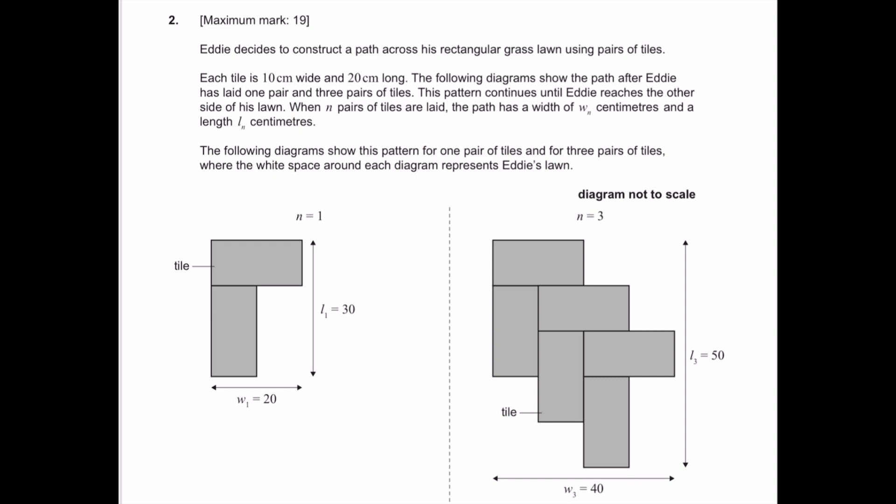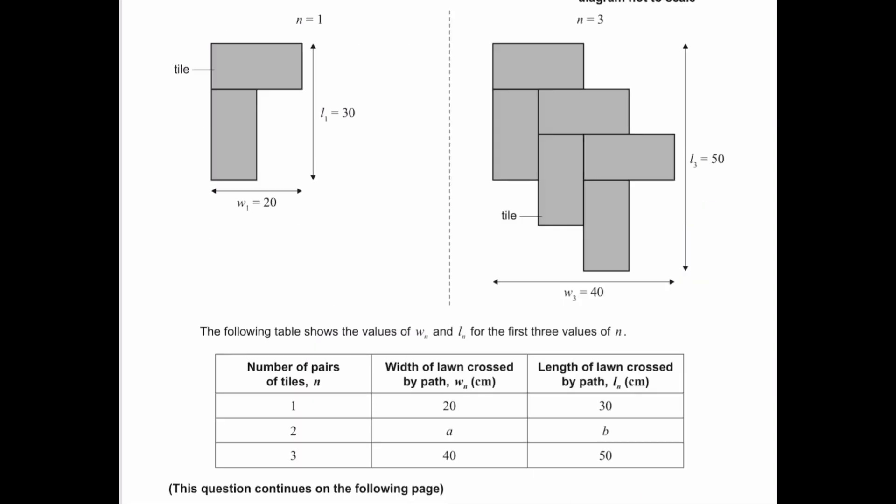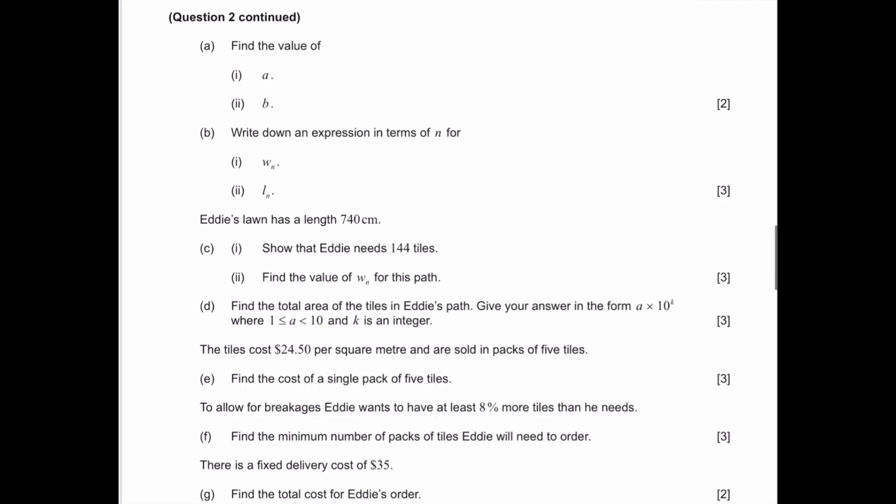This pattern continues until Eddie reaches the other side of his lawn. When n pairs of tiles are laid, the path has a width of Wn centimeters and a length Ln centimeters. The following diagrams show this pattern for one pair of tiles and for three pairs of tiles, where the white space around each diagram represents Eddie's lawn. The following table shows the values of Wn and Ln for the first three values of n. Part A: find the value of A and B.